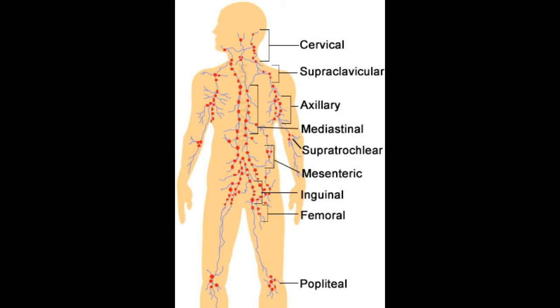Mediastinal lymph nodes: They are present in the central part of the chest between the lungs. They drain from the middle section of the chest cavity, parts of the upper abdomen and lungs. Supratrochlear lymph nodes: These nodes are present on the arms just above the elbow joints. They drain from the fingers, hand on the ulnar side of the arm and superficial areas of the forearm.